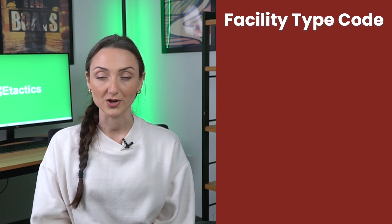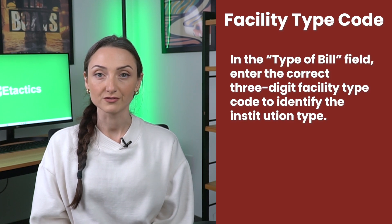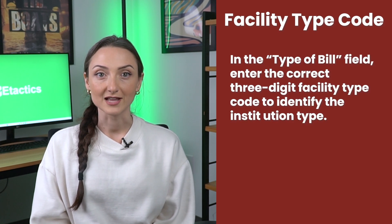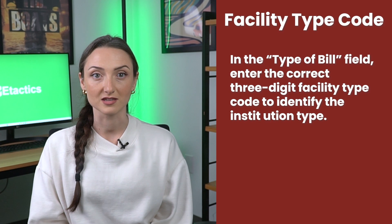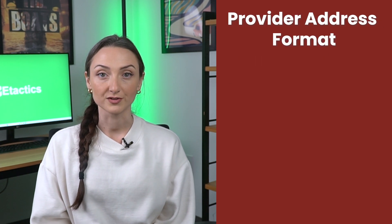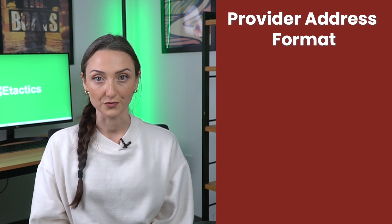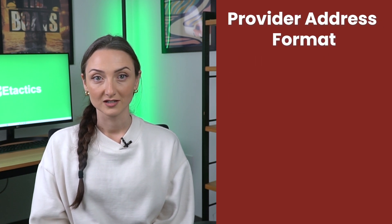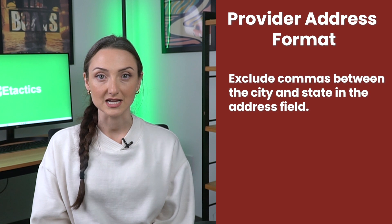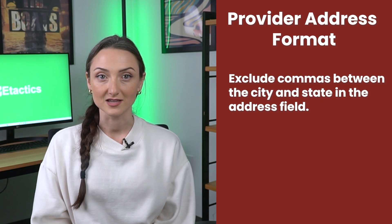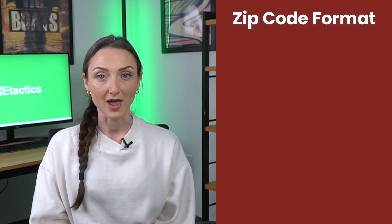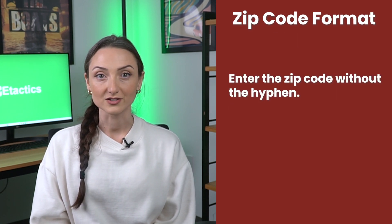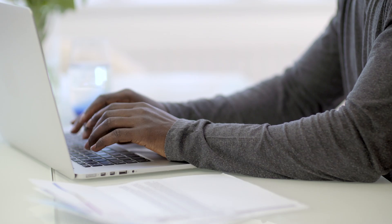Facility type code: in the type of bill field, enter the correct three-digit facility type code to identify the institution type. For provider address format, exclude commas between the city and state in the address field. For zip code format, enter the zip code without a hyphen.